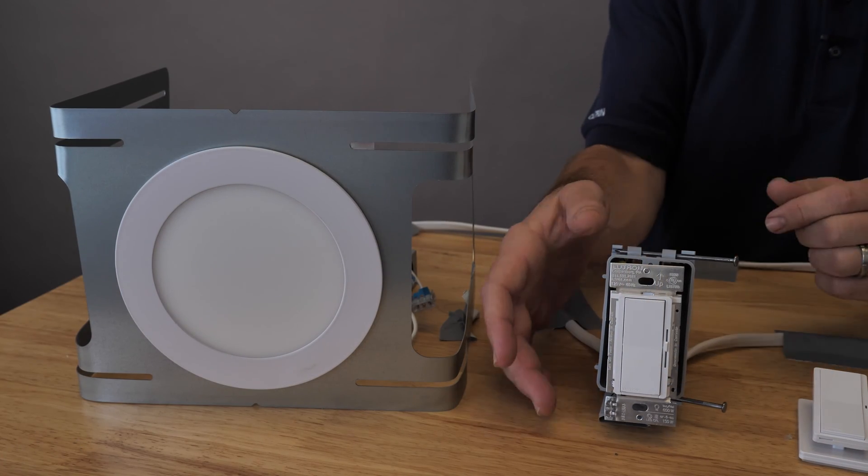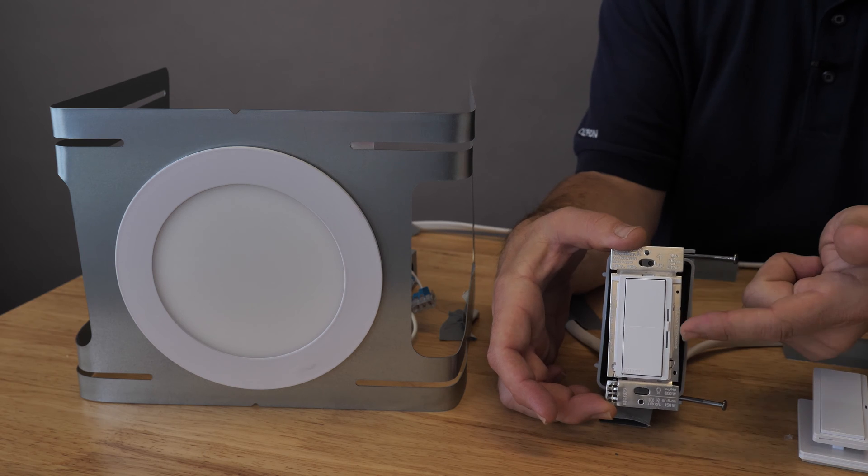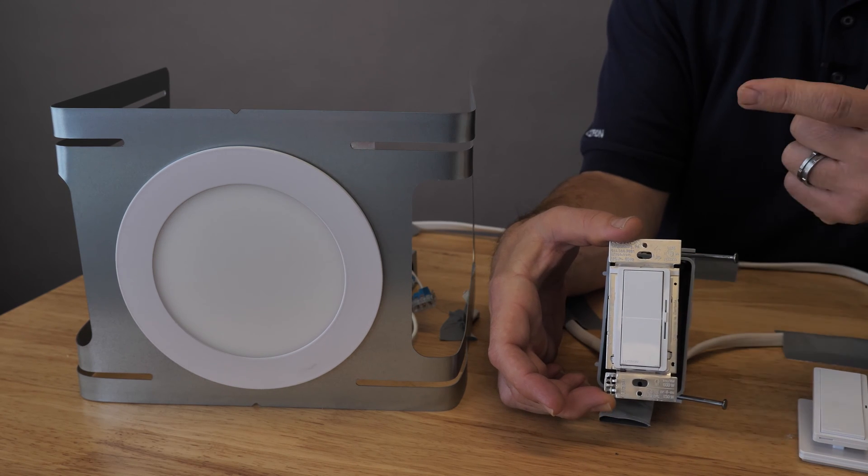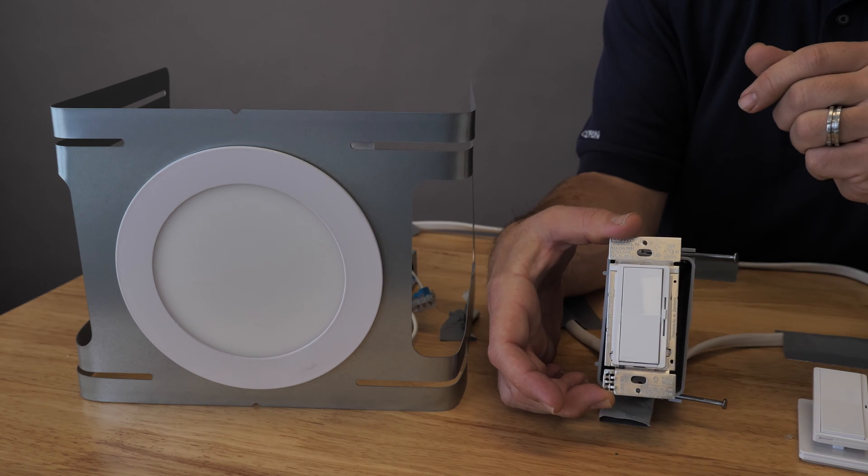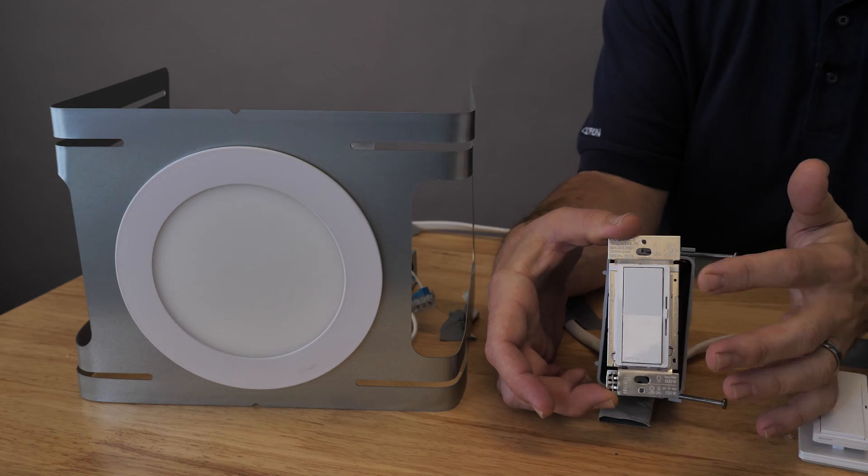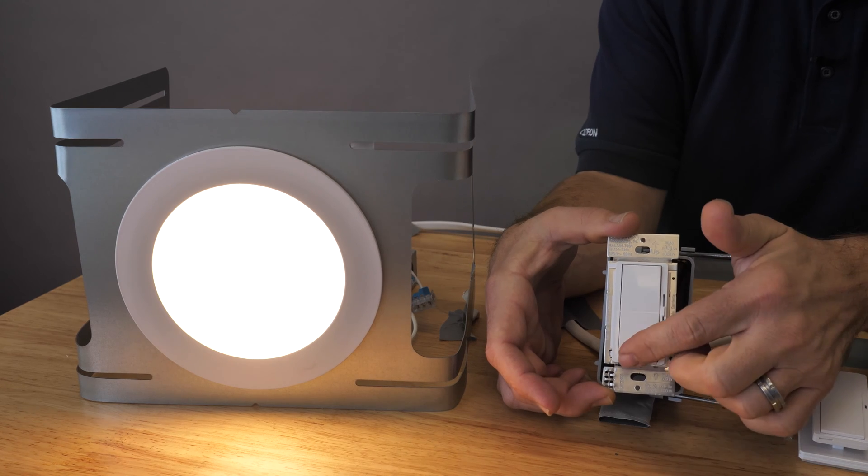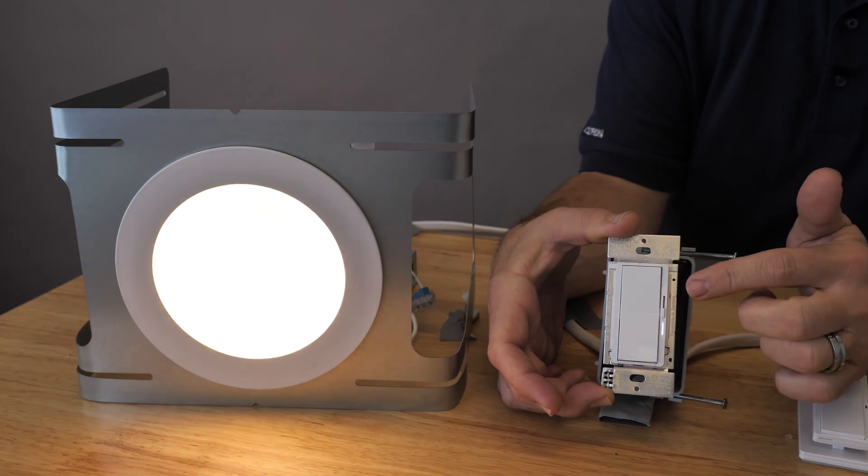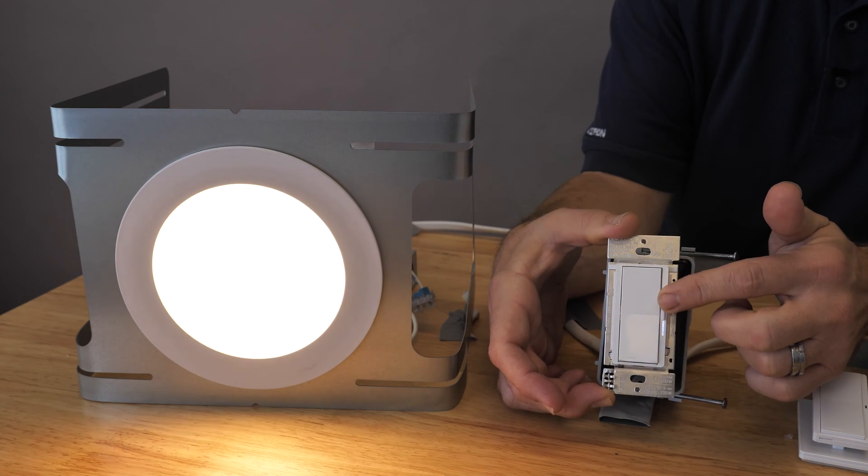Let's talk about functionality. The Diva RF has a very sleek design that looks just like the old Diva series, which has been the number one Lutron seller for probably 20 years or more. You'll have your same intuitive on off function like you would a regular Decora switch and then you would have your slide up and down for your dimming controls.